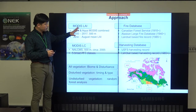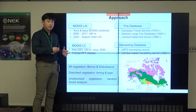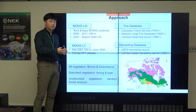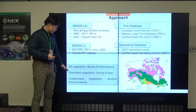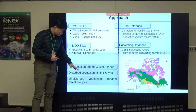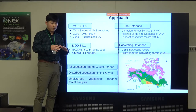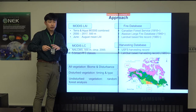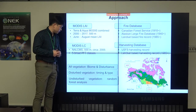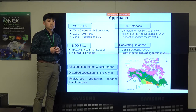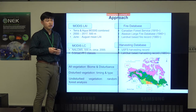Based on this dataset, I first investigated how vegetation changes differ by biome and whether disturbance happened or not. I also looked at how the timing and type of disturbance create different spatial patterns of vegetation change. For undisturbed vegetation, I used a random forest approach to figure out which environmental factors regulate different changes.